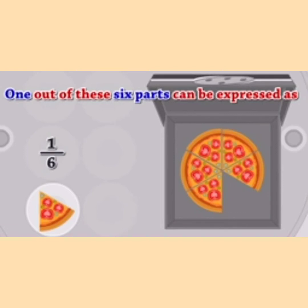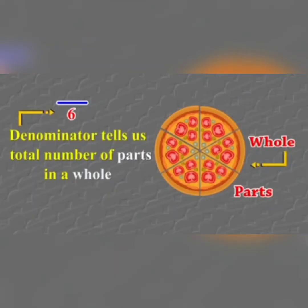The fraction is 1 upon 6. The denominator tells us the total number of parts in a whole — a complete whole. We call it the total parts.